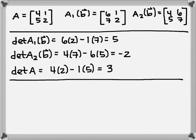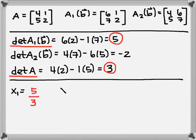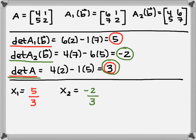Now I'm going to apply Cramer's Rule. X sub 1 equals the determinant of A1B, which is 5, over the determinant of A, which is 3. X sub 2 is the determinant of A sub 2 of B, which is negative 2, over the determinant of A, which is 3. So my solution vector X is equal to 5/3 and negative 2/3. I just plug in the numbers once I've found them.